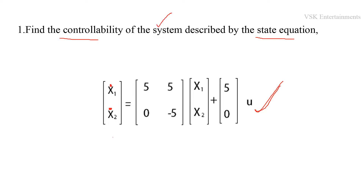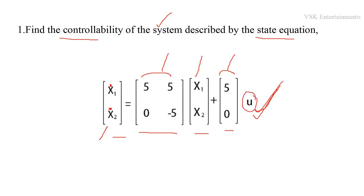The state equation is: [x1_dot, x2_dot] = [[5, 5], [0, -5]] * [x1, x2] + [5, 0] * u. Here, the first matrix is the system matrix A, x1 and x2 are the state variables, the second matrix is the input matrix B, and u is the input. By using this, we are going to test the controllability of the system.